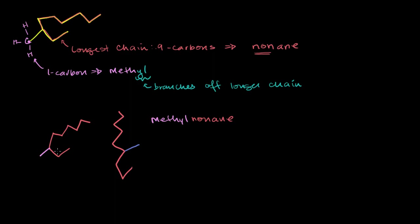There are two possible ways to number this chain. You could start from one end, making the methyl group attached to the 7th carbon, or you could start from the other end, making it the 3rd carbon. You want to number it so you're closest to the methyl group. Starting from the correct end: 1, 2, 3, 4, 5, 6, 7, 8, 9 — and so the methyl is attached to the third carbon on our nonane backbone.